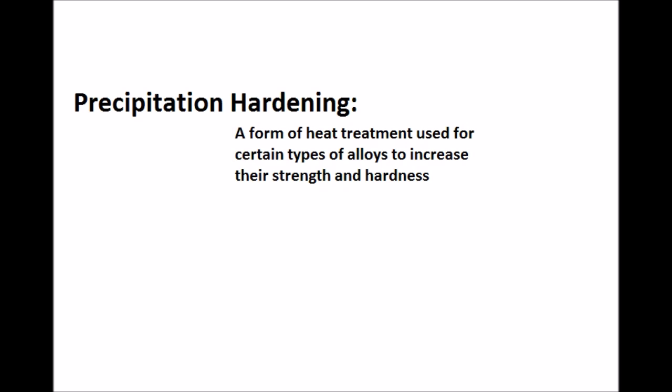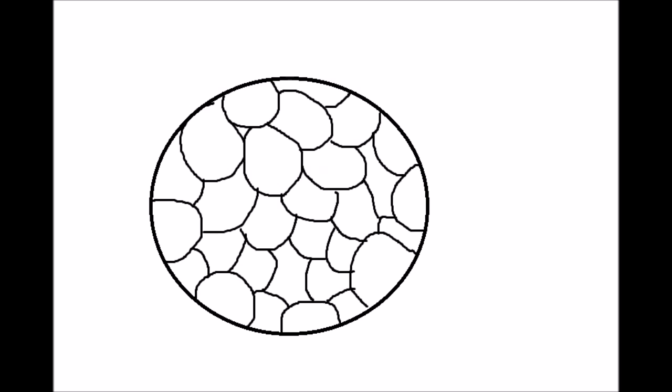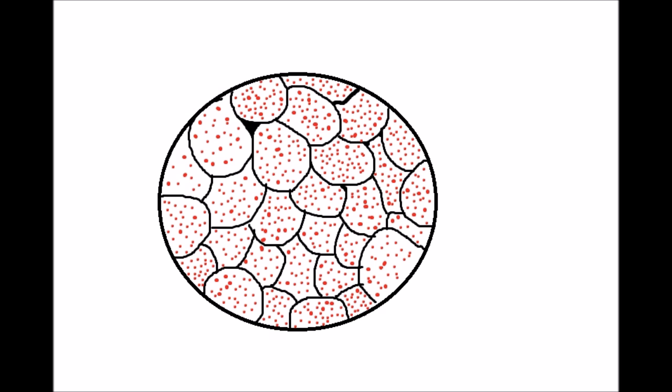Precipitation hardening occurs by forming small precipitates within the initial phase. As you can see in this drawing of a grain structure, the red dots that have formed are a representation of how the precipitates will form evenly throughout the grains in a secondary phase.